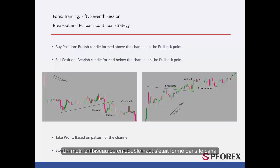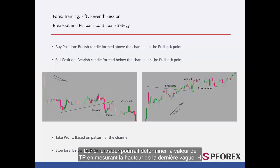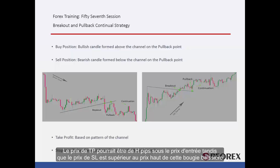A wedge or double top pattern had formed in the channel, so a trader could determine the TP amount by measuring the height of the last wave H. TP price could be H pips under the entry price, while SL price is higher than the price of that given bearish candlestick.